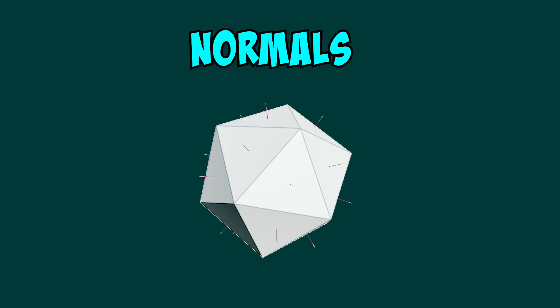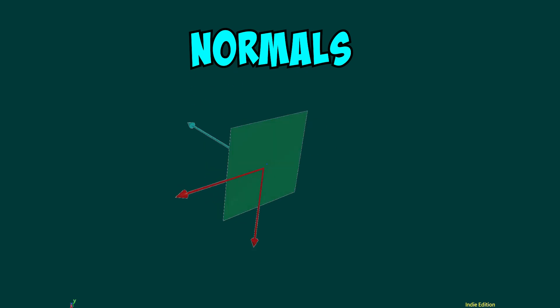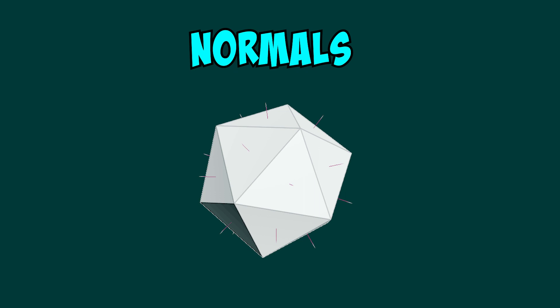I wanted to illustrate how normals are important in 3D graphics. Normals are the directions each primitive is facing on the model — is it facing up, or is it facing down, maybe even sideways? The point is, the normal is always perpendicular to the primitive face. The normal vector is 90 degrees to the primitive.